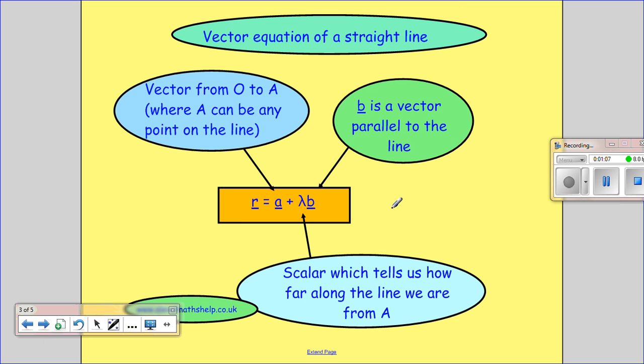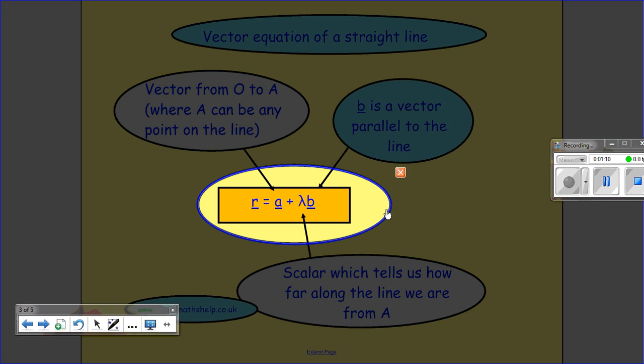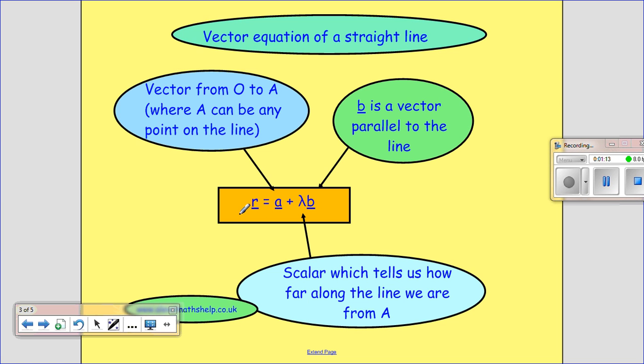Okay, so the vector equation of a line is given by this, where R is the vector equation of the line. A is the position vector which takes me from the origin up to my line, so that lets me jump onto my line.